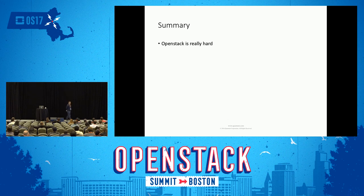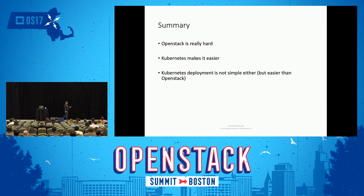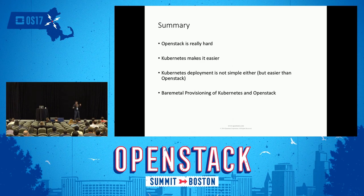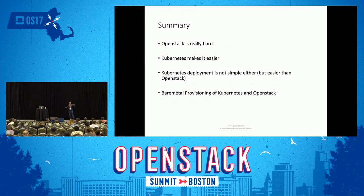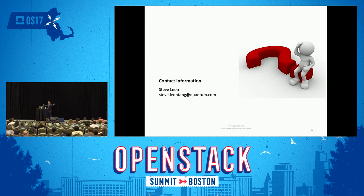To summarize - OpenStack is really hard, and you guys probably agree with me. It's really hard to deploy, and once it's deployed it's really hard to manage, really hard to scale, and let's not talk about upgrading it. Kubernetes makes it easier, but Kubernetes is also not for the lighthearted - you still have to know how to deploy it. But the good news is there are a lot of tools that help. I want to take it a step further though - I want to be able to turn on my server, get a cup of coffee, come back 15 minutes later, and have production-grade OpenStack running. That's what I want. And with that, this is the end of my presentation.